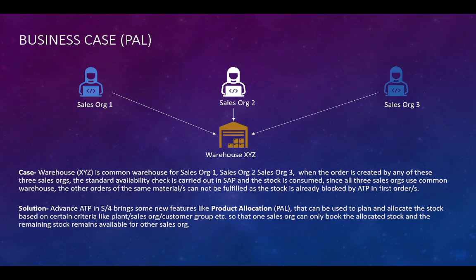To control this, SAP has come up with the new feature called product allocation in advanced ATP in S4 HANA. Advanced ATP's product allocation can be used to plan and allocate the stock based on certain criteria like plant, sales organization, customer group, etc., so that one sales organization can only book the allocated stock and the remaining stock remains free for the other sales organizations. Once a team can only use the allocated stock to cater to its own customers, the remaining stock is still available for the other teams. This is like a quota assignment.